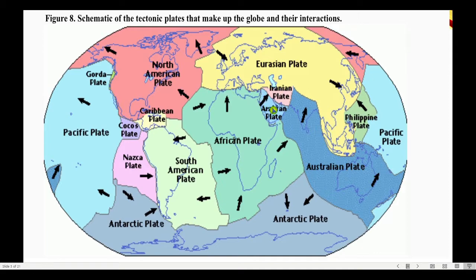Let's take a look at the given figure showing the relative motions of the crustal plates. Here, you will see arrows which indicate the direction of movements of plates, and plates are directed in different directions. Based on what was presented, can you identify some plates demonstrating convergent, divergent, or transform fault boundary?